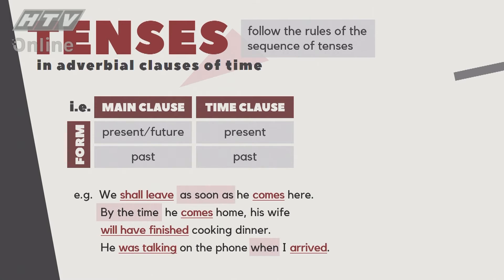Chúng ta xem ví dụ: 'We shall leave as soon as he comes here.' 'We shall leave' là mệnh đề chính; 'as soon as he comes here' là time clause. Tiếp theo: 'By the time he comes home, his wife will have finished cooking dinner.' Và: 'He was talking on the phone when I arrived.' Hai câu đầu diễn tả ý tương lai, câu thứ ba là quá khứ.